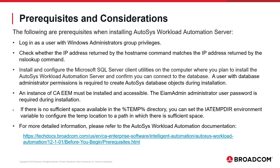The following are prerequisites when installing Autosys Workload Automation Server. Log in as a user with Windows Administrators Group privileges. Check whether the IP address returned by the hostname command matches the IP address returned by the nslookup command. Install and configure the Microsoft SQL Server client utilities on the computer where you plan to install the Autosys Workload Automation Server and confirm you can connect to the database.